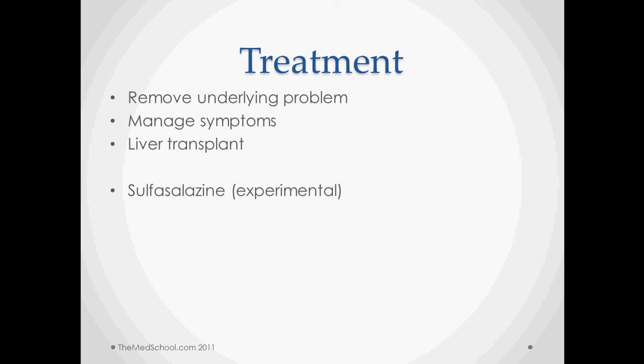Some of these we can treat by removing the underlying problem. For example, with Budd-Chiari syndrome, sometimes you can do surgery to provide extra blood supply to the liver. You can manage some of these symptoms, but ultimately liver transplant is the only way to really correct the problem. Sulfasalazine is in experimental trials with the possibility of reversing or aiding in the reversal of liver damage, so we'll probably see some of that in the future.